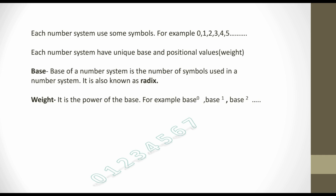What is the base of a number system? The base of a number system is the number of symbols used in that number system. It is also known as radix. That is, base equals the number of symbols used in a number system. The symbols 0, 1, 2, 3 are the symbols in each number system. The number of symbols differs, so the base of a number system differs in each number system.